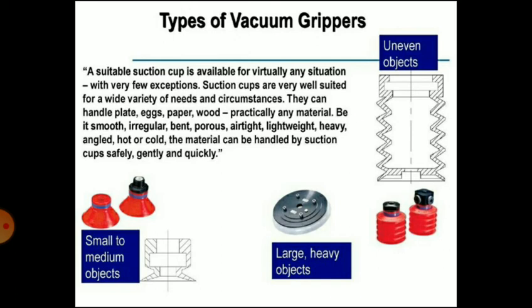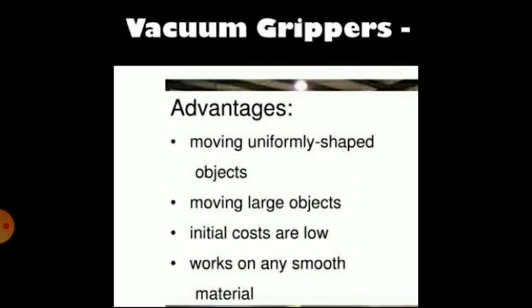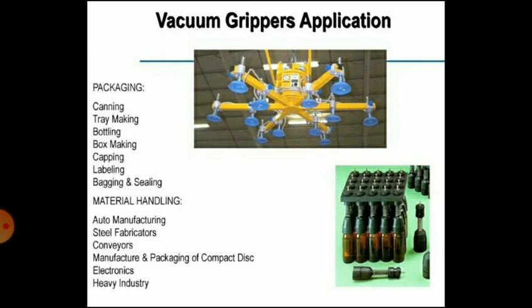Vacuum grippers offer suitable suction cups for virtually any situation. They can handle plates, eggs, paper, wood — practically any material — from small to medium objects, large and heavy objects, and uneven objects. Advantages of vacuum grippers include moving uniformly shaped objects, moving large objects, low initial cost, and works on any smooth material.